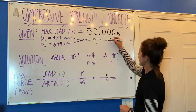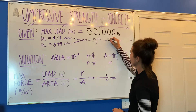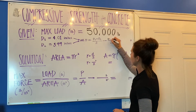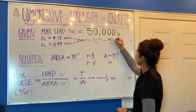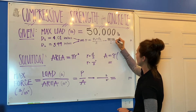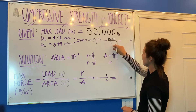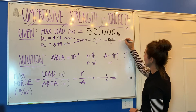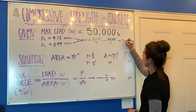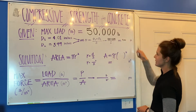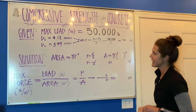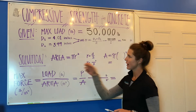We need to find the average of those, so we are going to do 4.01 plus 3.99 and divide that by two to find the average of 4.00 inches.